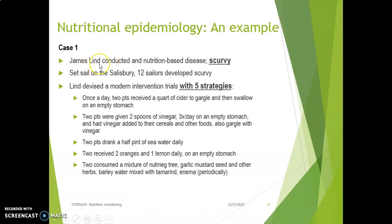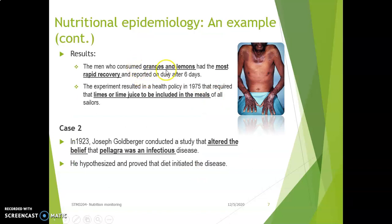Another example is James Lind. He found 12 sailors with scurvy and came up with five intervention strategies: some were given cider, vinegar, sea water, orange and lemon, or nutmeg, garlic, mustard, and others. He found that those who ate oranges and lemons recovered the fastest — after 6 days they could return to work. This showed lime or lime juice should be included in sailors' meals as a health policy.